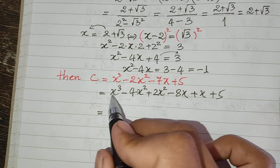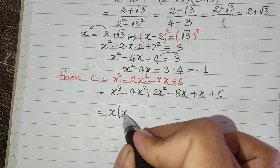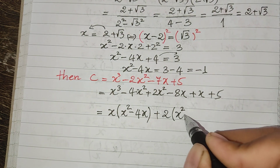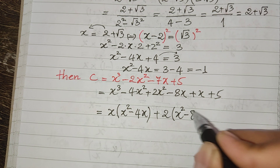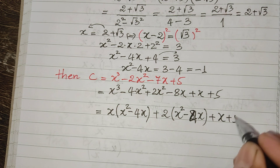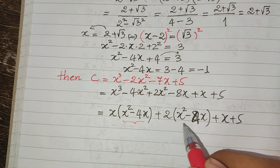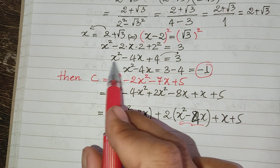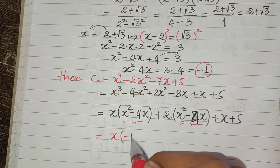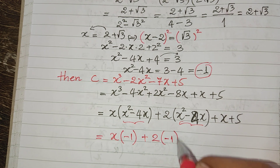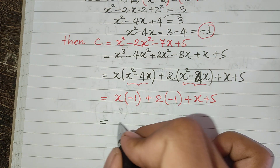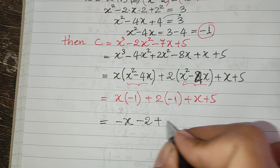We can replace x squared minus 4h with minus 1, and x squared minus 4h with minus 1. So this becomes h times minus 1, plus 2 times minus 1, plus 8, plus 5. So it equals minus h minus 2 plus 8 plus 5. Now we can cancel: minus 2 plus 5 equals 3. So now we get the value of expression C equals 3, which is our solution.